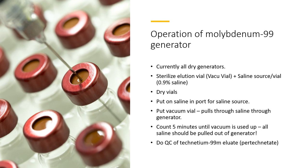Currently all molybdenum generators are dry. You use a dry vacuum vial, put saline in, push it through, and count five minutes until all the vacuum is used up, making sure all the saline is removed. It is generally best to put on your vacuum vial, connect your saline, let it pull all the saline through, and then wait an additional five minutes to make sure it's dry. If you have problems with your generator, most often placing another vacuum vial on and drying it again will solve the issue.